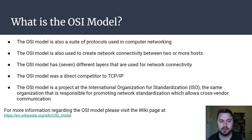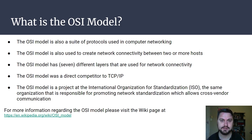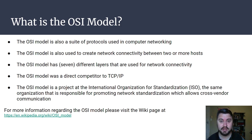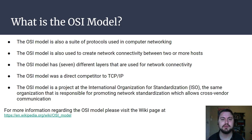So what is OSI? It is also a suite of different protocols mushed together for computer networking. It is also used to create network connectivity between two or more hosts, just like TCP/IP. It has seven layers of connectivity. It was also a direct competitor to TCP/IP, back in the 70s and 80s. And it is also a project at the International Organization of Standardization, the ISO. This organization is responsible for standardizing as much as possible, making it fair for different vendors to use the same type of network communications.